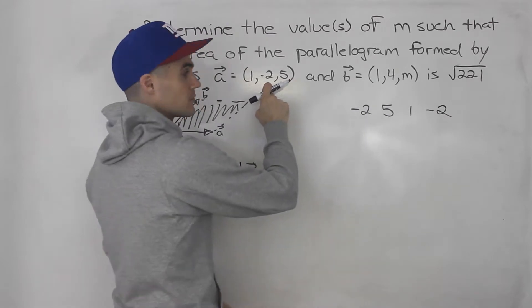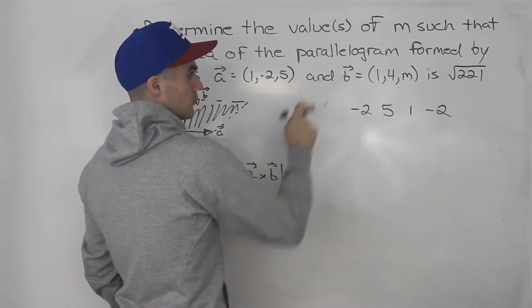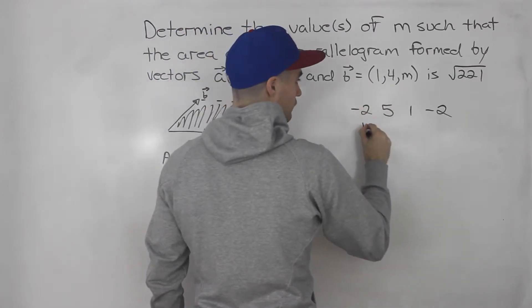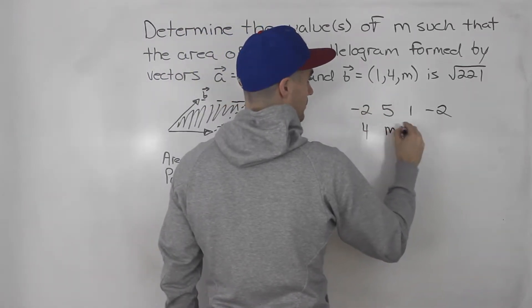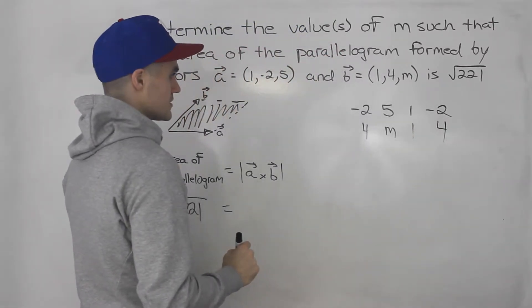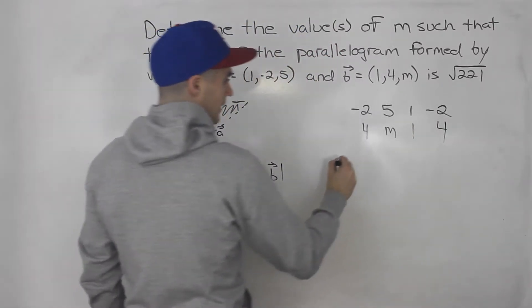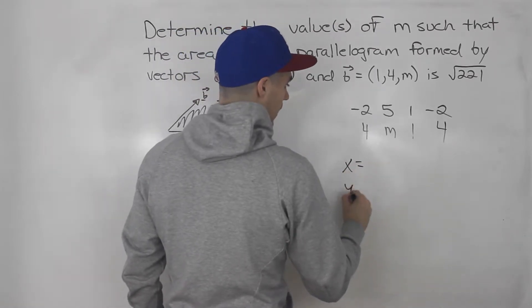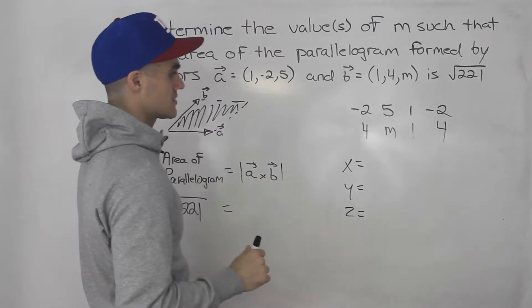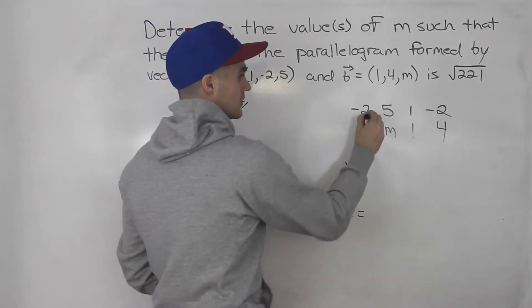Once we get to that z component, we come back to the x component and rewrite that y component one last time. Remember the endpoints? It's always that y component. Then we write out vector b starting with the middle component. So we got 4, here we'll have m, then we got 1, and then we got 4 again.